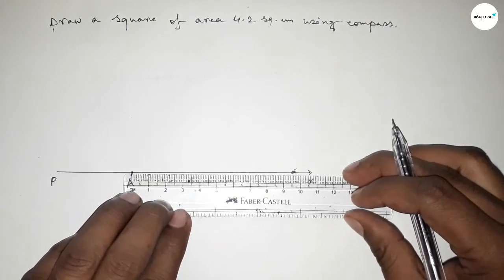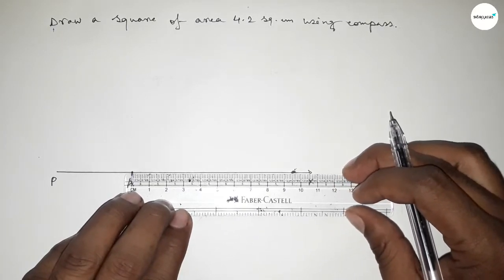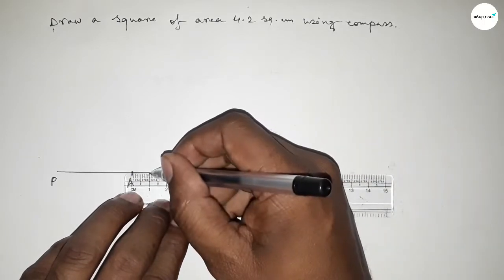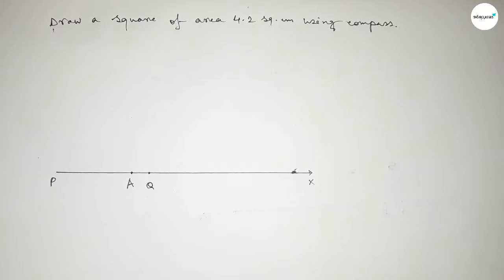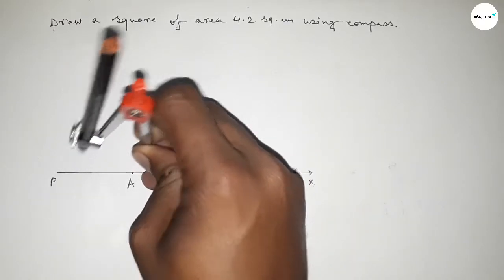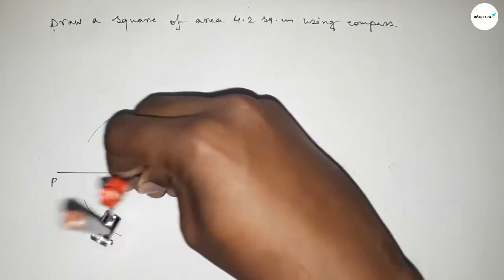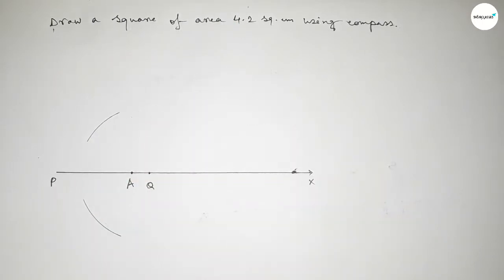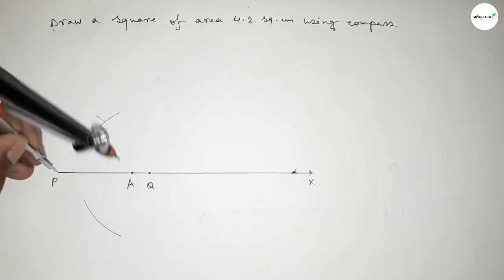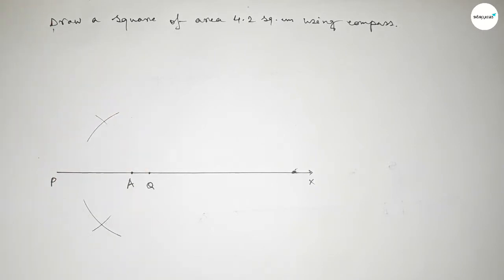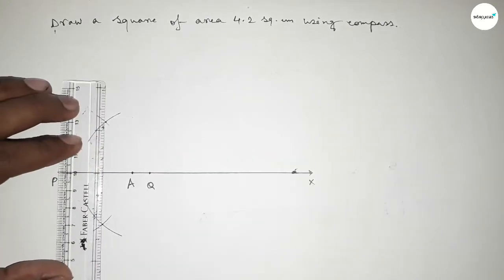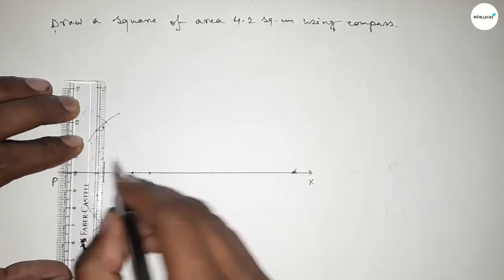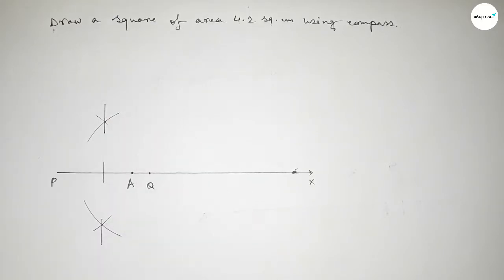Next, take one centimeter further from point A and mark point Q. Now bisect the line PQ by placing the compass at P, taking a radius greater than half of PQ, and drawing arcs. Repeat from point Q with the same length so both arcs intersect at two points, then join these intersection points.